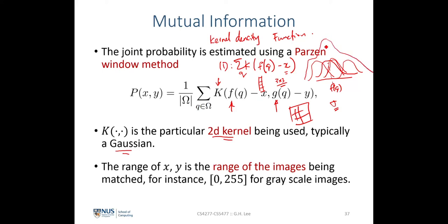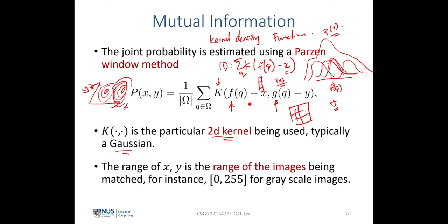This would be the distribution for the 1D example over x. For the 2D example, we are looking at a two-dimensional space with x and y. The joint distribution corresponds to each pair of values from f and g, giving a 2D Gaussian kernel. In the 3-by-3 example with 9 entries per vector, we have a combination of 9-by-9 kernels, and the joint probability is simply the superposition of all these Gaussian kernels.